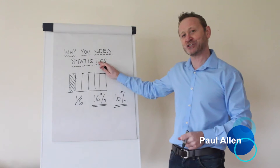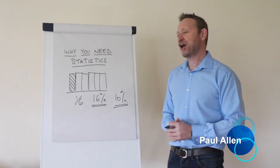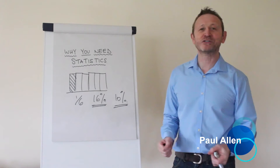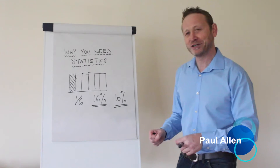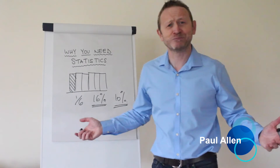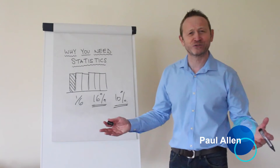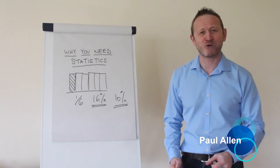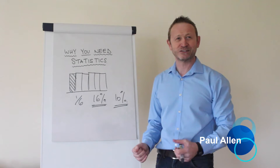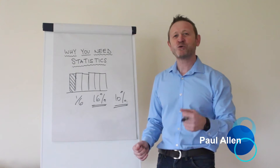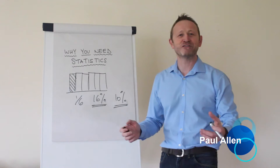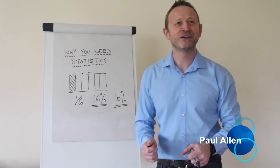I'll give you one last example to show you the power of statistics — and you can take it away and maybe use it at Christmas. It's playing Monopoly. Monopoly is a nice random game, isn't it? You just roll the dice, land on certain squares, and stuff happens to you. It's completely random. Or is it? What's everybody trying to do in a game of Monopoly? Well, they're all trying to buy Mayfair and Park Lane. Why do you do that?